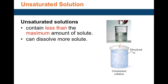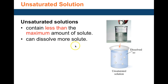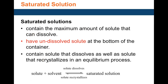Solutions that do not reach the maximum amount of solute are called unsaturated. For example, if you have 100 grams of water and you've only added 20 grams of sodium chloride, that's unsaturated because the maximum capacity is 39 grams. There's room for more solute — a solution that has not reached the maximum point of solute is called an unsaturated solution.